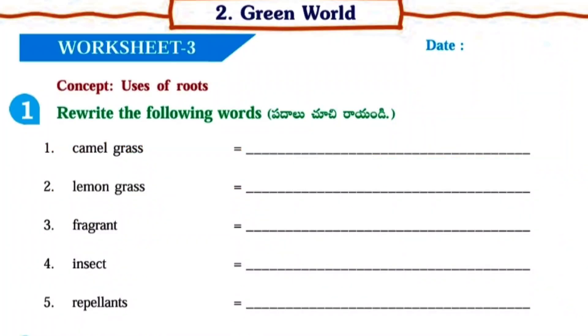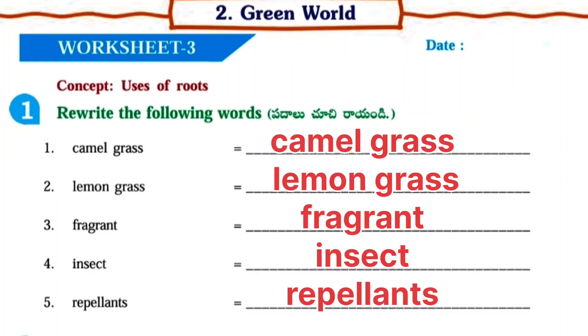Next, Worksheet number three. Concept: Uses of roots. Rewrite the following words: Camelgrass, lemongrass, fragrant, insect repellents.